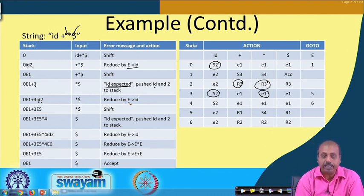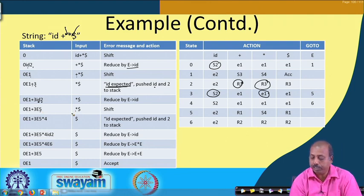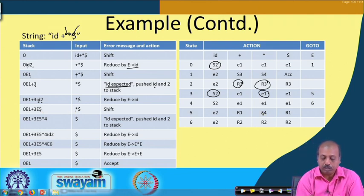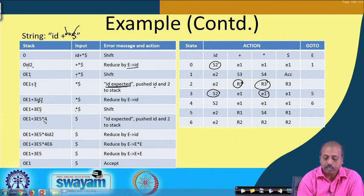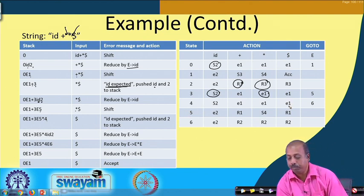Rule number 3 is applied and the reduction takes place, giving a new stack configuration. Now state 5 with star says shift 4, so star is shifted into the stack along with state 4. Now with state 4 and dollar, this is again an error entry.